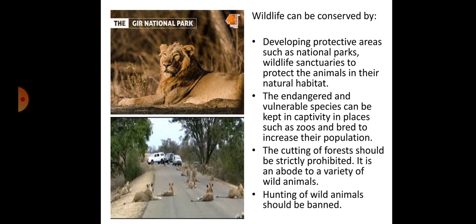Wildlife can be conserved by developing protected areas such as national parks and wildlife sanctuaries to protect the animals in their natural habitat. Endangered and vulnerable species can be kept in captivity in places such as zoos and bred to increase their population. The cutting of forests should be strictly prohibited.